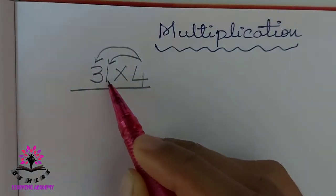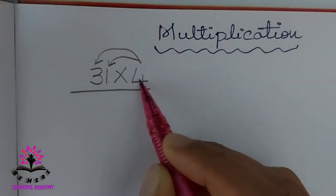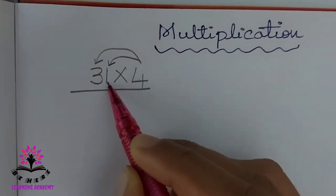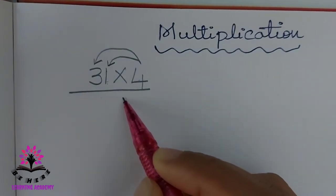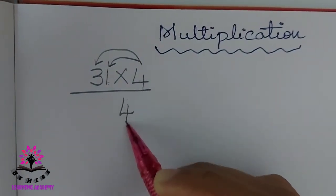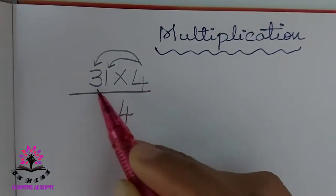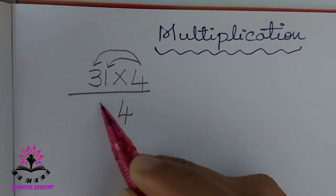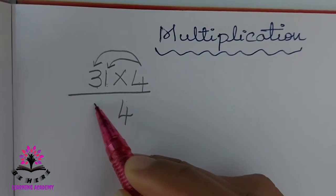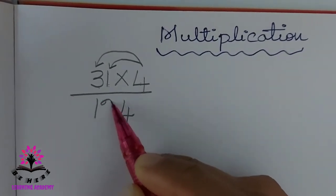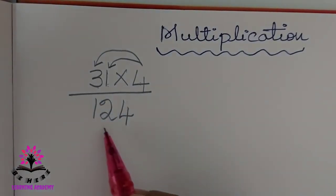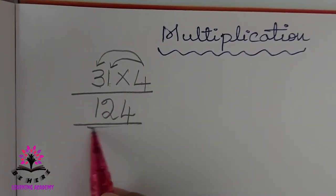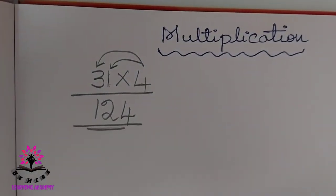4 into 1 — 4 ones are 4. 4 threes are 12. So the answer is 124.